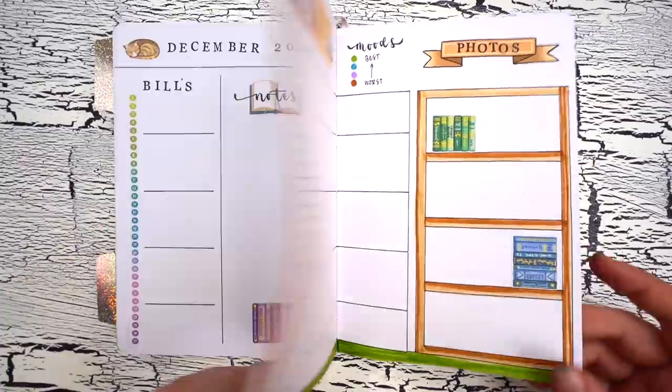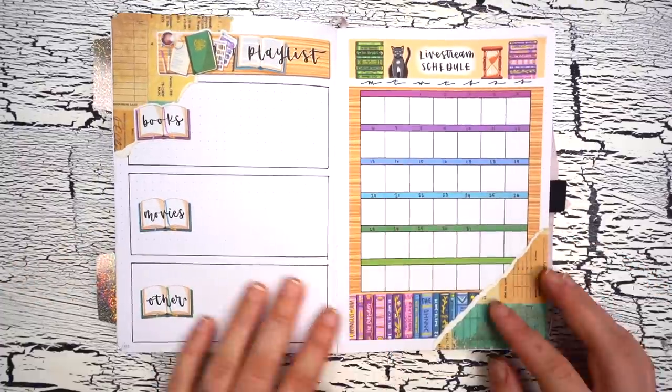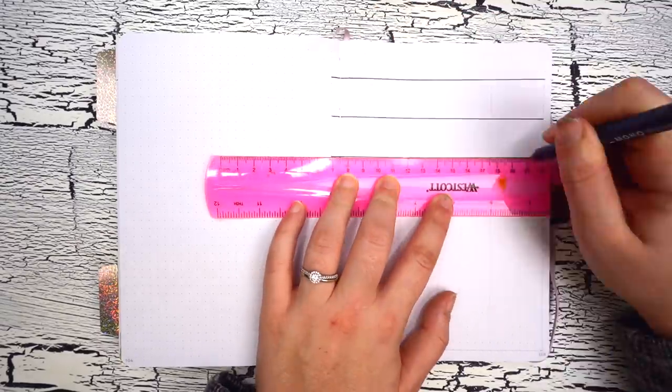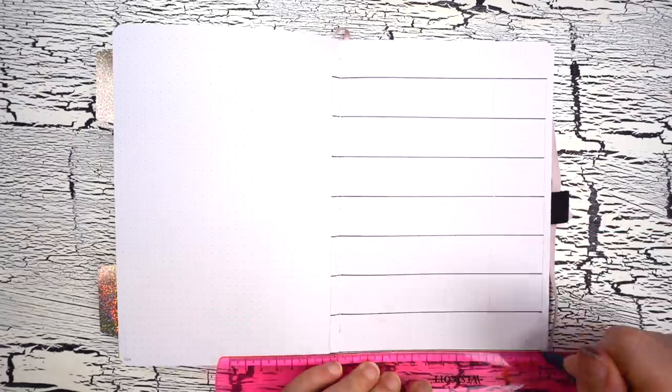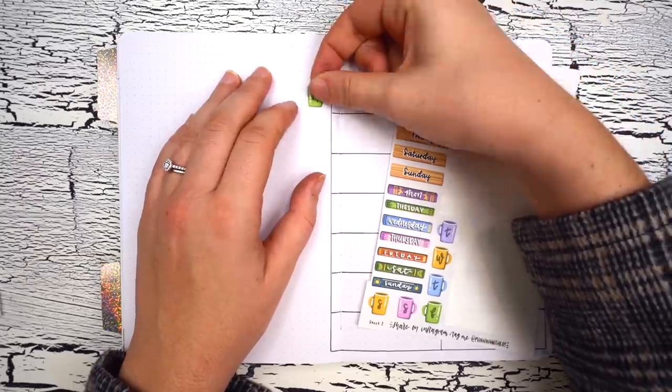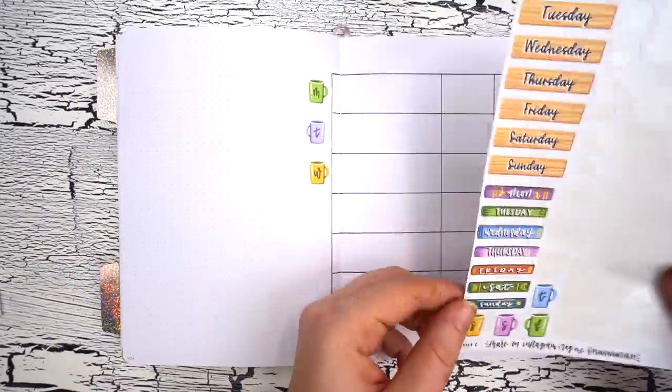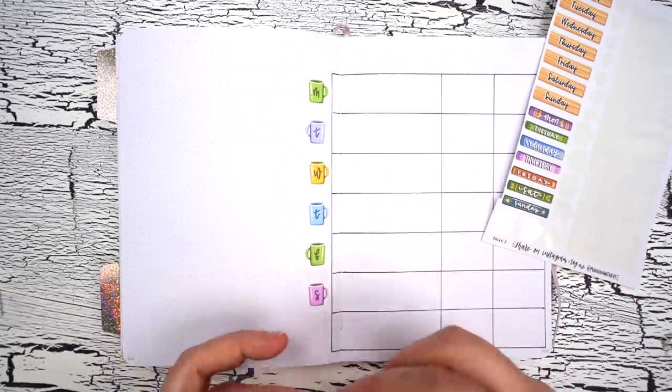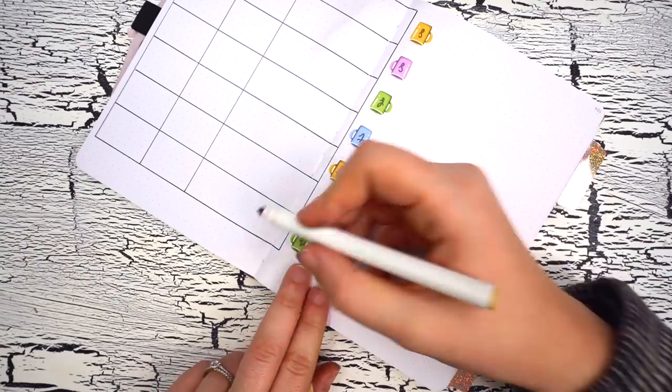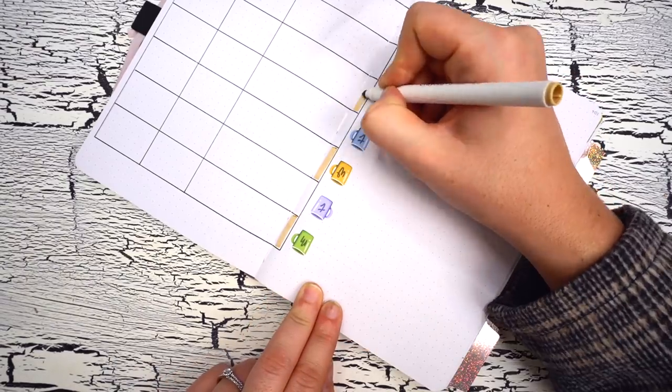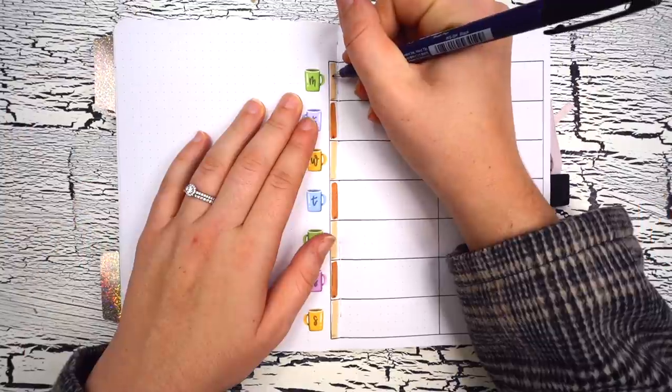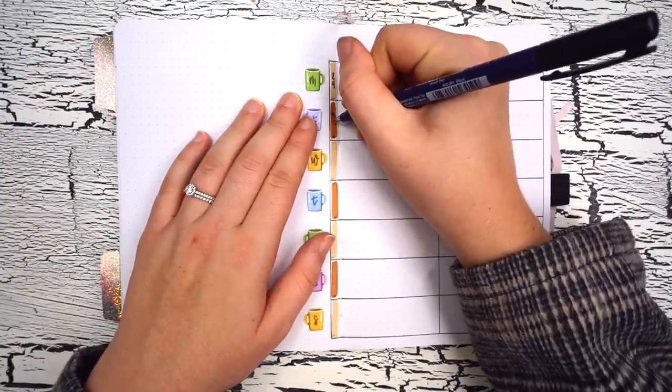All right, so for this weekly spread here I'm going to start off with some daily sections on the right. Each day is going to get a row that is five spaces tall and I'm splitting each day into three sections: one for tasks and events that day, one for any bills that are due that day, and finally a section for any live streams that I have scheduled. I'm labeling my days of the week with these adorable little coffee mug headers from the monthly kit and then just using the same two brown Crayola markers and the brush pen from before to write in my dates next to those, and this is going to be for November 29th through December 5th.